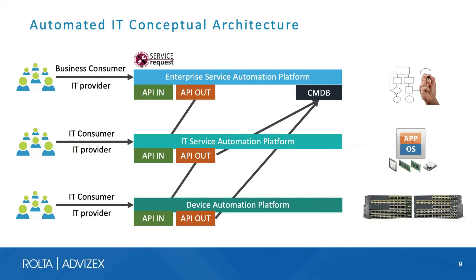Another key IT service is enabled by device automation — capabilities enabled through scripting that allow any device, whether virtual or physical, to be remotely deployed and configured via an automation script. The key aspect of the conceptual architecture is API integration between these three focus areas. Each area of IT has specialized skill sets best suited to its level of service delivery.